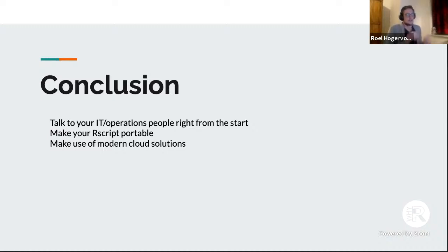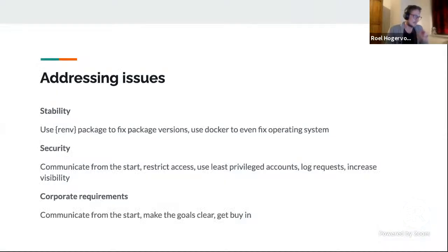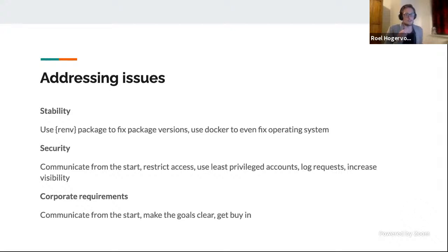My conclusions are: talk to your operations people. Talk to all of the stakeholders right from the start. Let them know what you want to achieve, and let them know that you understand that stability and security are also important to you. Make sure that your R script is portable — make sure that it runs almost automatically and that it runs on other computers as well. You can make use of these modern cloud solutions. For stability, you can use the renv package to fix the package versions. You can even use Docker to make an entirely fixed operating system — an entire package that you can just hand over to someone else and say: run this. Think about communication, restricting access, and make sure you're using accounts that have just enough rights to do the thing you want and nothing else.